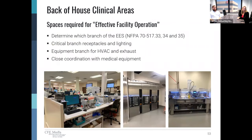The next room types are back of house clinical areas, such as labs, pharmacies, central sterile, and other similar room types serving a clinical function. These are spaces required for effective facility operation. You'll want to determine which branch of the EES you need for the different functions of these rooms. Similar to nursing staff areas with the critical branch, but you'll have a lot more equipment requirements for the emergency power. These room types will have receptacles and circuits serving clinical equipment on critical branch power, as well as critical branch lighting. Any HVAC equipment serving these rooms you want on equipment branch power. A lot of these areas will have medical equipment that you should coordinate with their respective disciplines.